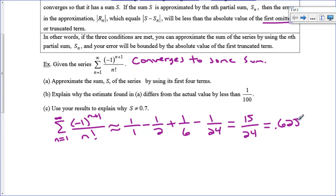Alright, now there's obviously an error because I left off some terms. Now we can explain why this estimate differs from the actual value by less than one over a hundred. So what we want to do, we want to look at the first omitted term. We plugged in one, two, three, and four.